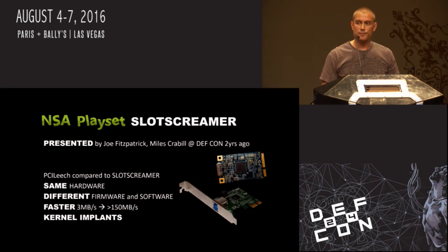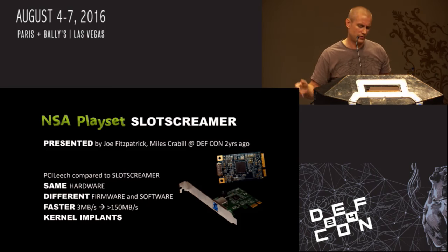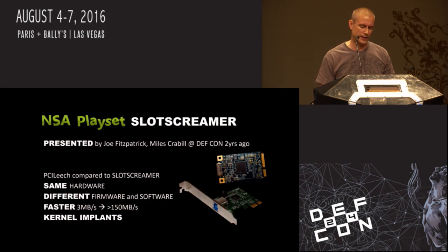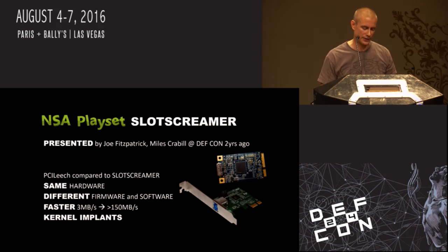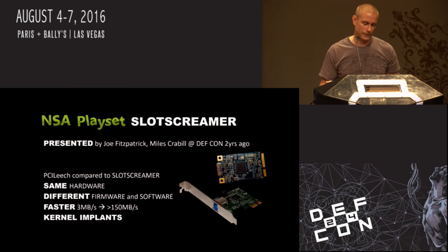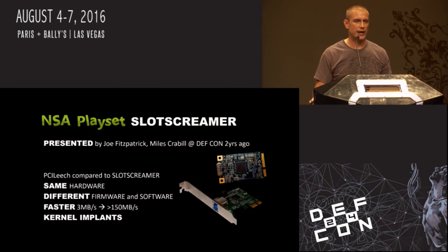PCILeech is faster — the Slot Screamer was able to achieve around 3 megabytes per second, while the PCILeech device achieves well over 150 megabytes per second DMA transfer speeds. PCILeech is also capable of kernel implants; in fact it relies heavily on kernel implants.